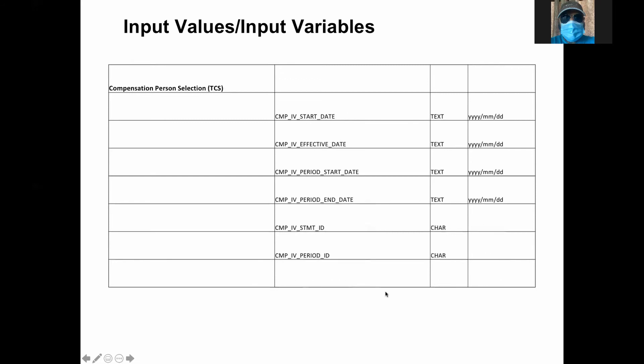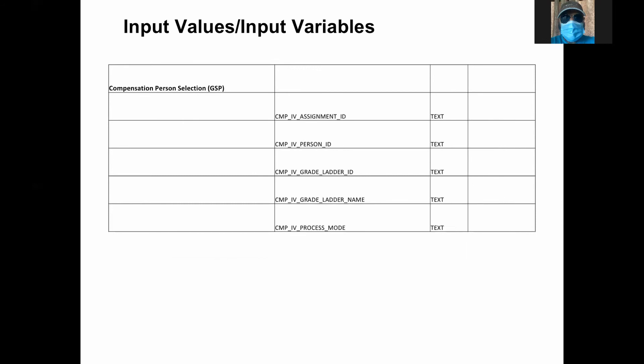I'll see how they differ in all the three columns. If you look at compensation from CWB, it passes the plan information and the dates. But when you are looking at TCS, you pass the statement information, statement period, start date, end date, all this stuff. This is passed. This is how it differs.